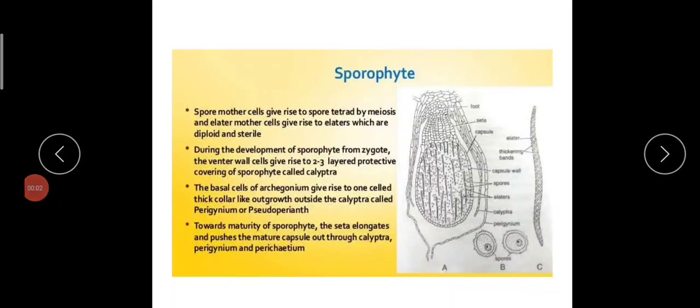Good morning students. In last class we discussed the structure of sporophyte of Marchantia and now you are familiar with this sporophytic structure. As we know, sporophyte has three different regions: foot, seta, and capsule.